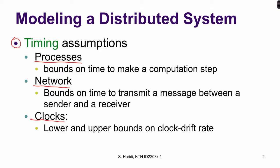Timing assumptions on processes are bounds on the time to make a computation step. Timing assumptions on network are bounds on the time to transmit a message between the sender and receiver. When we talk about clocks, we are concerned about local and upper bounds on clock drift rate, and we assume that each process has a physical clock.